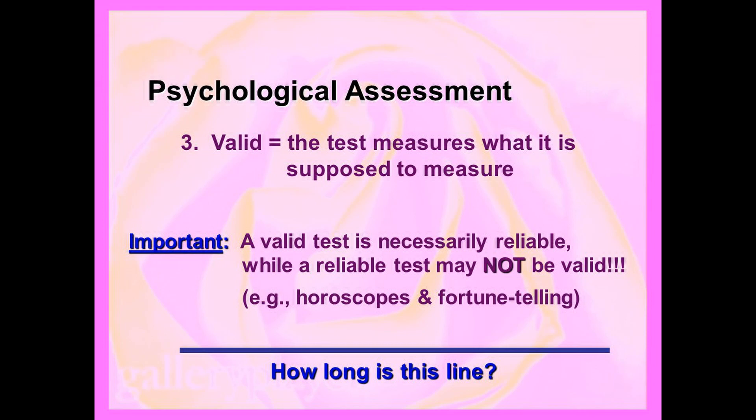Here's a simple illustration: a valid test is necessarily reliable, but a reliable test may not be valid. Imagine I draw a line and ask how long it is. If I give everyone a bad ruler with incorrect marks, everybody comes up with exactly the same measurement — that's reliable. And yet it's not a valid measurement. So yes, a valid test is necessarily reliable, but a reliable test may not be valid.